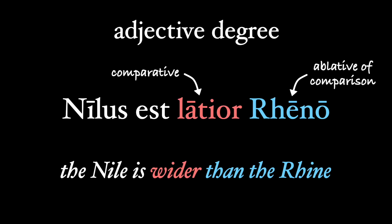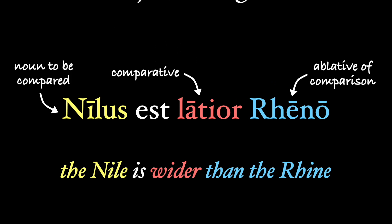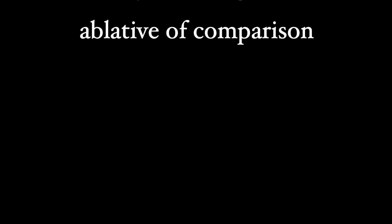In this video I'll be marking the ablative of comparison in blue, with the comparative in the salmon color, and the other noun we're comparing in yellow. Lots of colors, but I hope it helps you keep track of things. The next video, rule number 46, will spend some time discussing the use of 'quam' with the comparative. So let's focus in this video on the ablative of comparison.